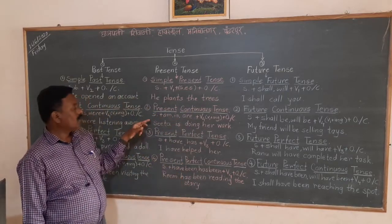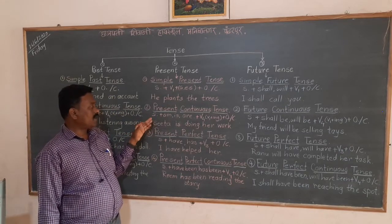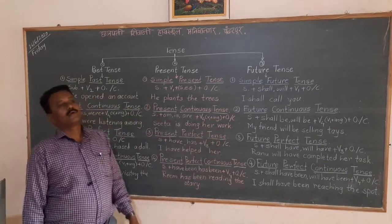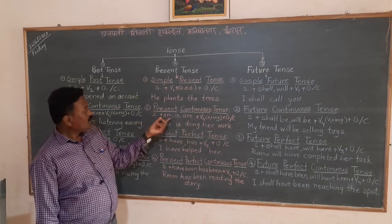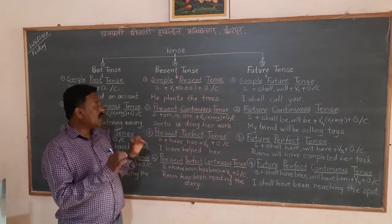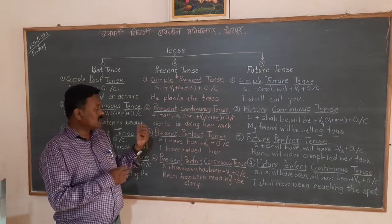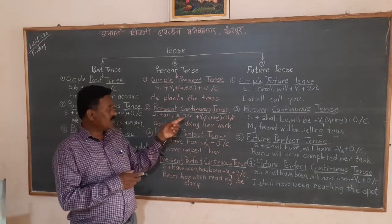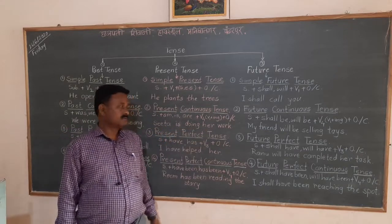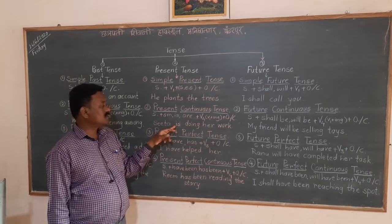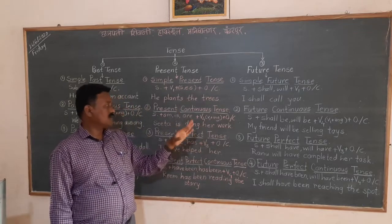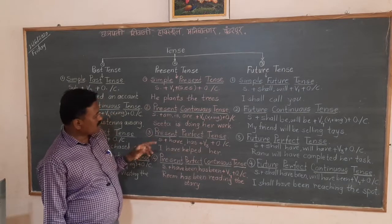The second is present continuous tense — what is happening now. The construction is subject plus am/is/are plus V4 (V1 plus -ing) plus object or complement. There are three auxiliaries: for 'I' we use 'am'; for singular subjects we use 'is'; and for plural subjects we use 'are'. Example: 'Srita is doing her homework.' Srita is singular, so auxiliary 'is' is used, and the verb is 'doing' (V1 plus -ing), with 'her homework' as the object.